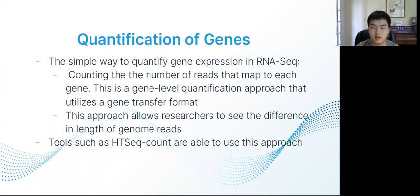The first topic in data analysis will be quantification of genes. The simple way to quantify gene expression in RNA sequencing would be to count the number of reads that map to each gene. This is a gene level quantification approach that utilizes the gene transfer format. Raw read counts are affected by factors like transcript length and total number of reads. Thus, one needs to use a unit RPKM.